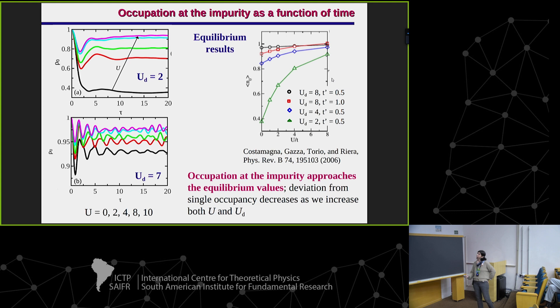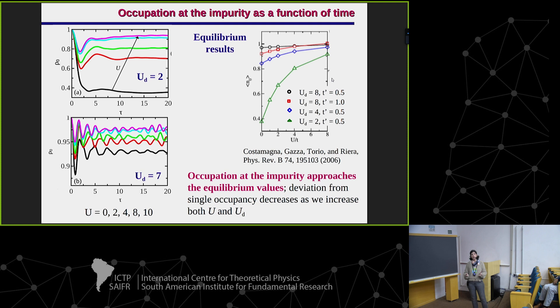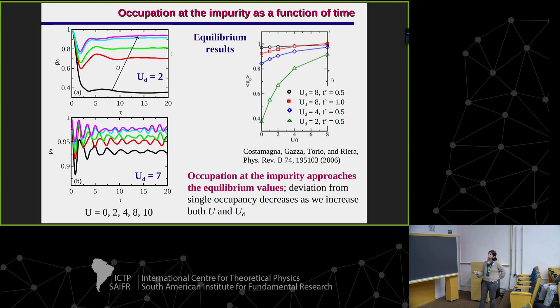Here are results for the occupation as a function of time for two different values of Ud — Ud equals two and Ud equals seven — and in each plot we have results for different values of U, increasing from the black curve to the magenta one. These are results from the literature for the equilibrium case. Since we are doing a local quench, we expect the occupation as a function of time to approach the equilibrium values. We also observe that the deviations from single occupancy decrease if we increase U or Ud, so we will keep U and Ud large in the next slides.